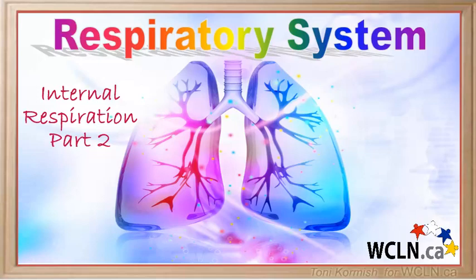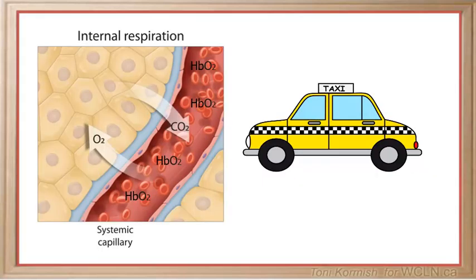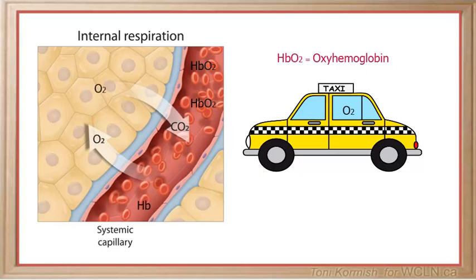Internal respiration refers to the exchange of gases between the tissues of the body and the systemic capillaries. First, oxygen has been carried to the tissues of the body in the form of oxyhemoglobin, which breaks down to release the oxygen molecules from the hemoglobin molecule. Oxygen is now free to diffuse across the cell membrane into the cells of the body to provide them with oxygen.